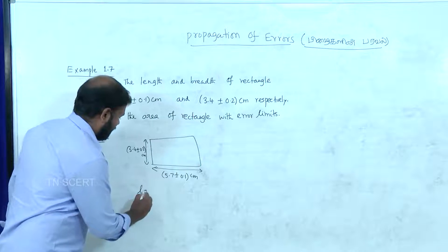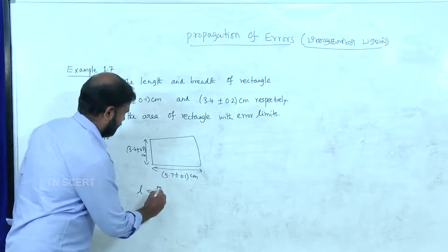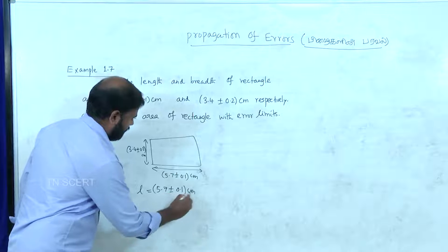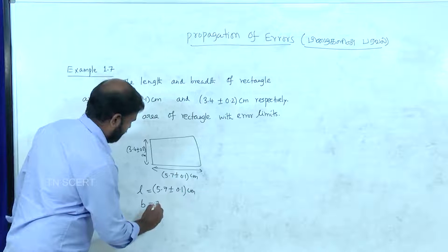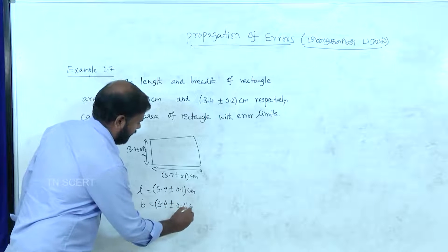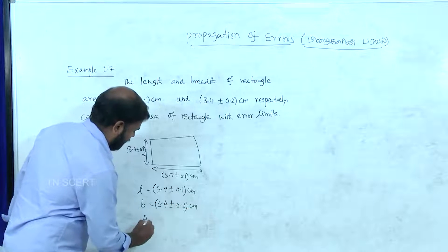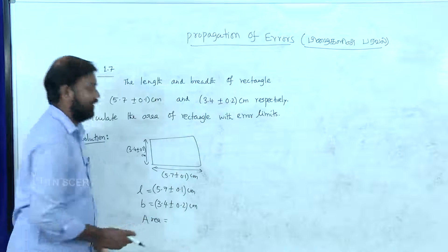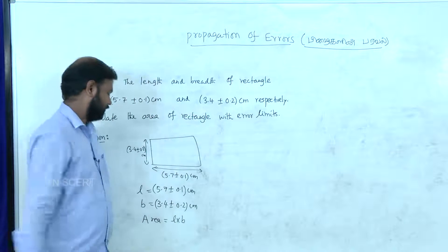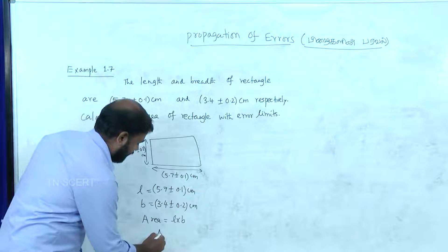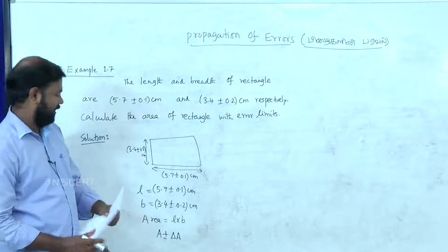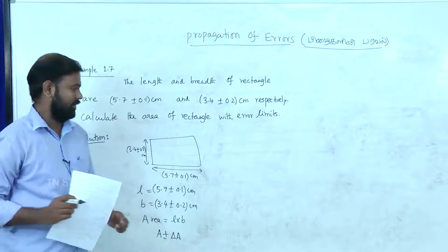Now, L is equal to 5.7 and B is equal to 3.4 plus or minus 0.2. The area of a rectangle is nothing but length into breadth, L into B. So we can look at the value of A plus or minus del A — we can look at the area of absolute error.